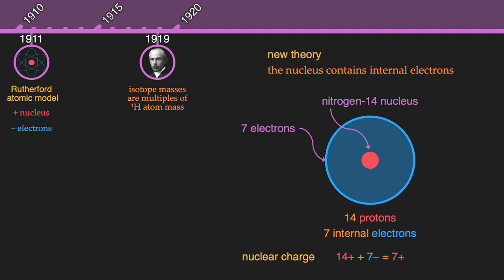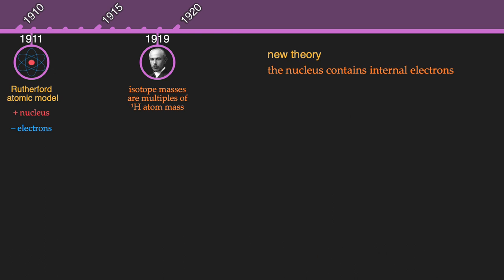While the nucleus of an atom does contain two types of particle, atoms certainly don't have internal electrons. But scientists proposed this model for a reason. It matched all the experimental evidence of the time: the masses of atoms, the charge of the nucleus, and the charge of atoms as a whole.